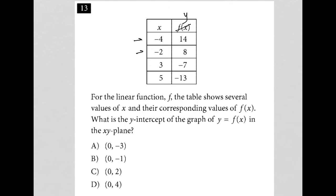We have ordered pairs at each row here, right? When x equals whatever's on the left, y is equal to whatever's on the right. The question goes on to say for the linear function f, the table shows several values of x and their corresponding values of f of x. What is the y-intercept of the graph of y equals f of x in the xy plane?